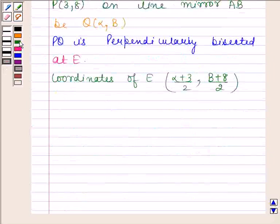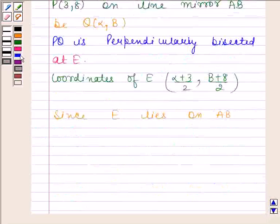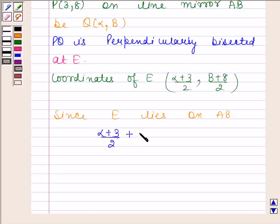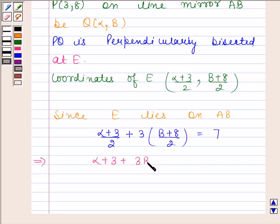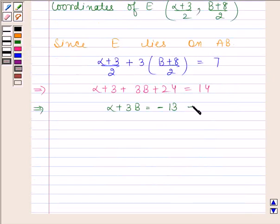Now since point E lies on AB, therefore it must satisfy the equation of AB. Thus, by substituting X as (alpha + 3)/2 and Y as (beta + 8)/2, we get (alpha + 3)/2 + 3 × (beta + 8)/2 = 7. This implies alpha + 3 + 3*beta + 24 = 14, and this implies alpha + 3*beta = −13.